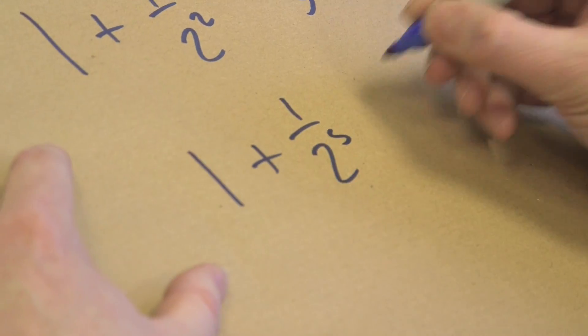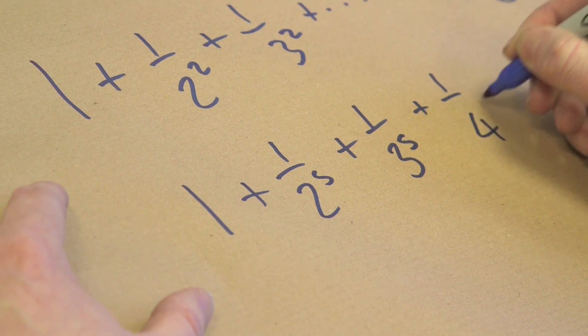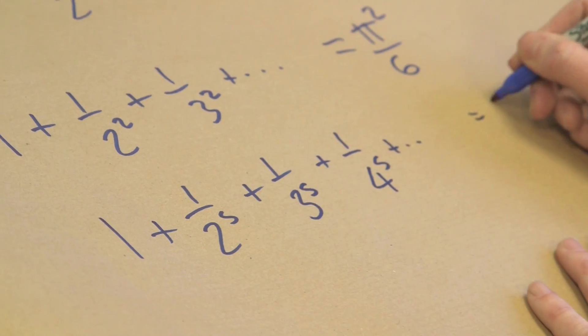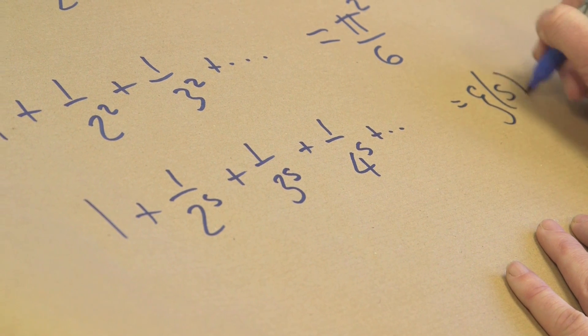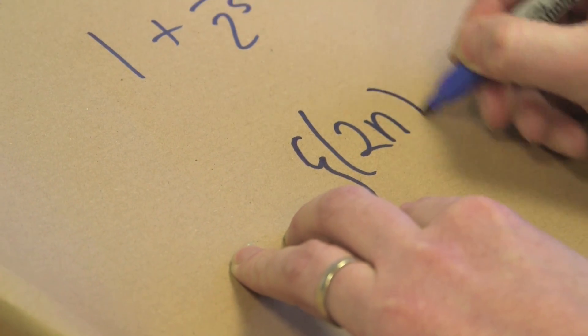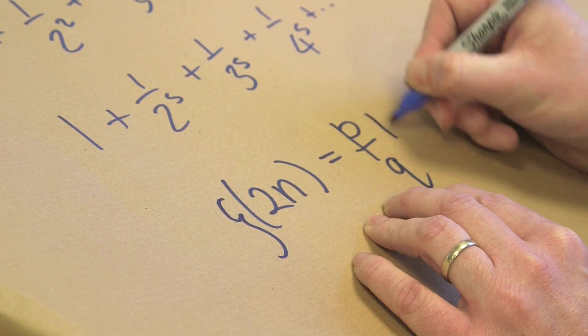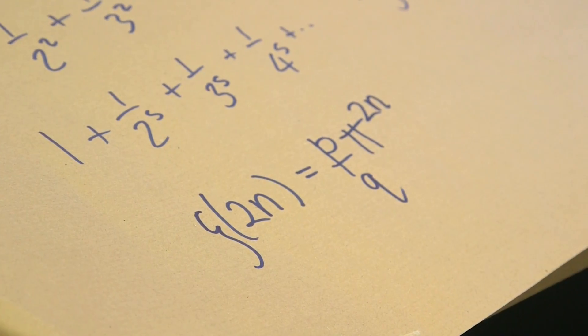Now of course Euler being Euler wasn't going to settle for just this. He wanted to do this far more generally. So he looked at the general form: 1 over 2 to the s, 1 over 3 to the s, 1 over 4 to the s, and so on — which we recognize as the Riemann zeta function. One can ask what values this takes at the positive integers, and this is what Euler was interested in. He was able to show that when you take even integers, this took the form of something rational times π to the 2n. So π being transcendental, this guarantees that this number is also going to be transcendental. That was for the even positions.